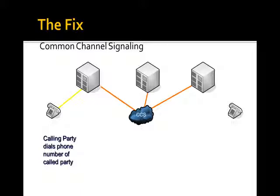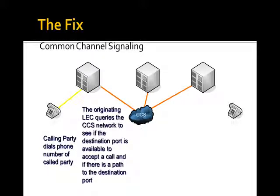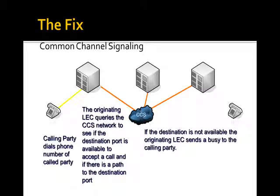So that same call: I pick up the phone and call a number that's going to go through several switches to you. Instead of actually building that path, my local switch is going to query the signaling network and ask if your phone on the other end is available — can it take a call? Are you busy? If it's busy, my local switch returns the busy signal to me. No more listening to busy signals across the country.